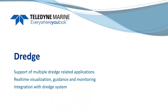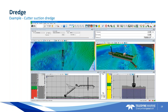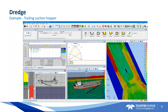We are also quite strong in dredge applications. Examples include wire crane, excavator, cutter suction, backhoe dredge, trailing suction, and hopper dredge. We supply the necessary views to monitor dredge progress. For a cutter suction dredge, you can add profile views and plan views — whatever you need to make your dredge as efficient as possible. For trailing suction hopper dredges, we can also monitor production and calculate ton dry solids.